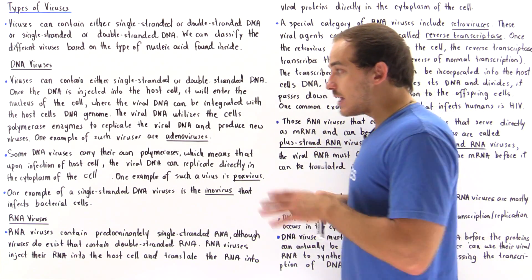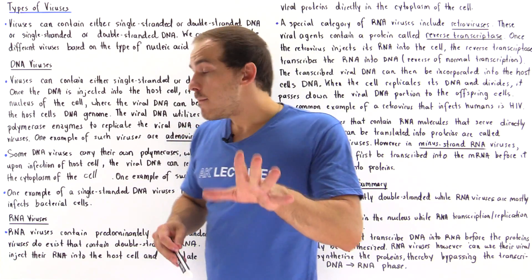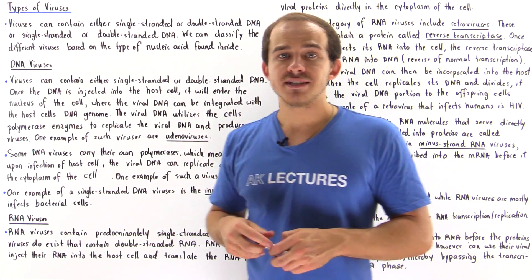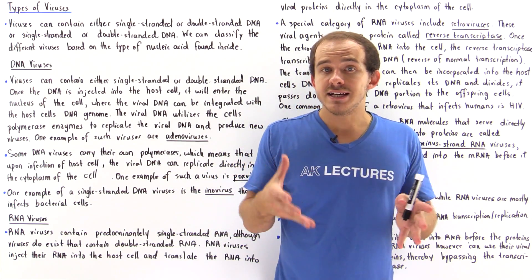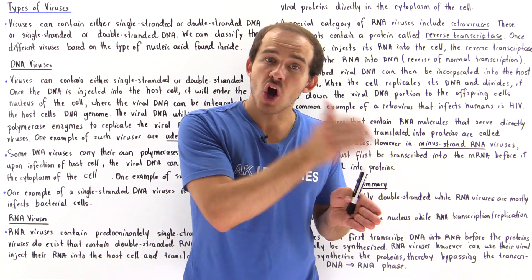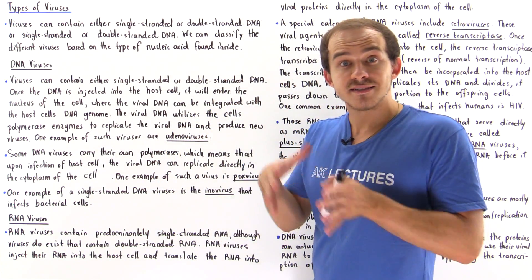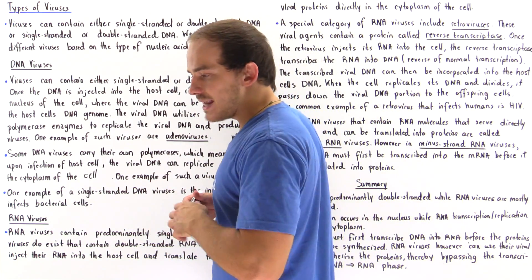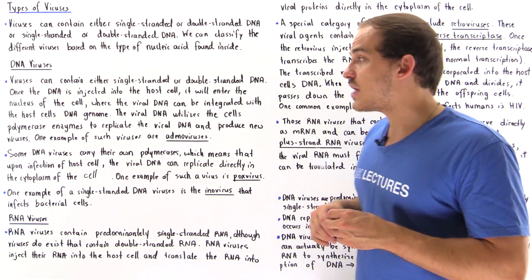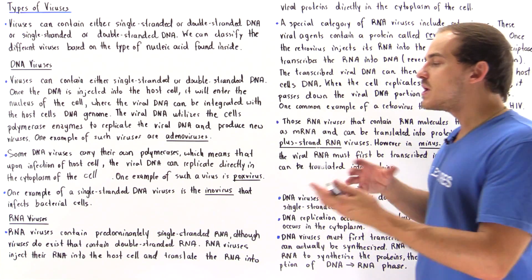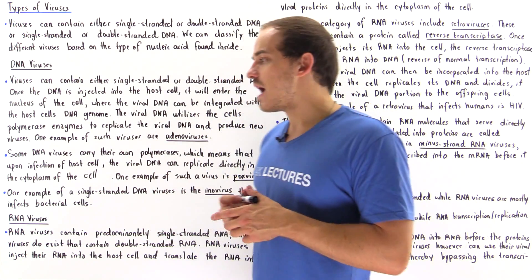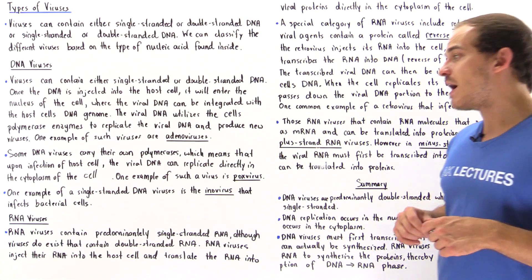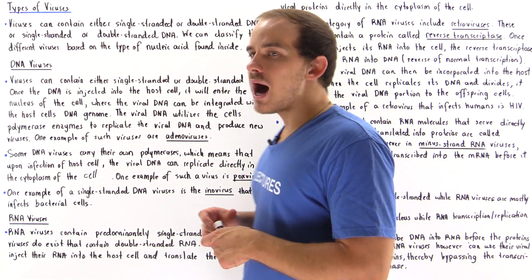Some DNA viruses, though much less common, actually carry their own polymerase enzymes. This means the DNA doesn't have to go into the nucleus — it can stay in the cytoplasm of the host cell and replicate and transcribe there to form the viral proteins needed for survival. One example of such a DNA virus is the pox virus.